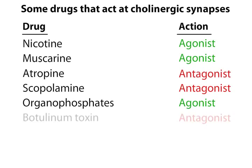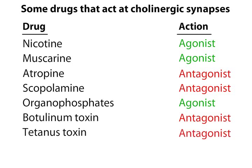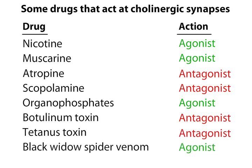Many other drugs also act at cholinergic synapses. Botulinum toxin is a potent bacterial poison that can grow in improperly canned food. Botulinum blocks the release of acetylcholine, resulting in muscular paralysis and asphyxiation. In much diluted form, botulinum toxin is marketed as Botox, which inhibits facial wrinkling by locally paralyzing facial muscles. Tetanus toxin is chemically similar to botulinum and is responsible for tetanus poisoning, or lockjaw. Finally, black widow spider venom causes the continuous release of acetylcholine at the neuromuscular junction, causing the muscle to respond violently until the supply of acetylcholine is depleted.